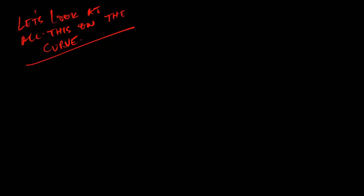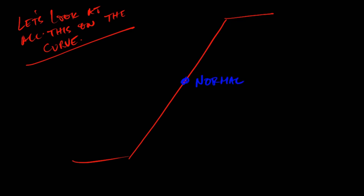On the shadow end, we bring lights in to lift the shadow area up into the bottom of the camera's latitude range. We set our normal exposure in the center — or wherever we decide, whether a little toward the shadows or highlights — and then use grip to bring the highlights down and lighting to bring the shadows up, so everything falls within that latitude range.